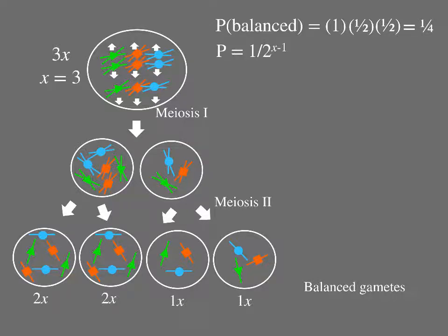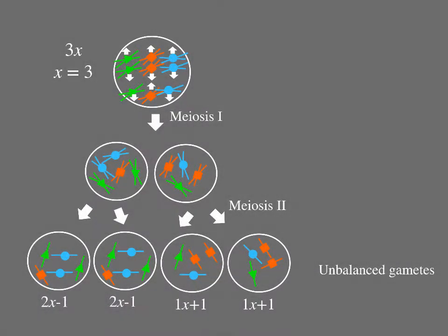You can see that the general formula for the probability that a meiosis in a triploid cell will produce balanced gametes is 1 over 2 to the x minus 1. Most meiosis will produce unbalanced gametes, this way for example. Here, one of the lone homologs segregated into a different cell than the other two did, and the result is unbalanced gametes. When x equals 3, the probability that a meiosis will produce unbalanced gametes is 3 fourths.